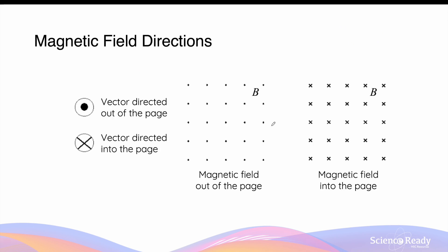Because magnetic fields exist in three-dimensional space, we use dots and crosses to denote field directions running into or out of the page. This convention is very useful in Year 12 physics. Dots represent a vector coming out of the page — meaning the field lines are coming towards you. Crosses represent field lines going away from you, into the page or screen.